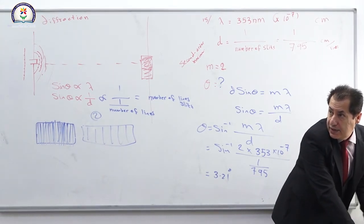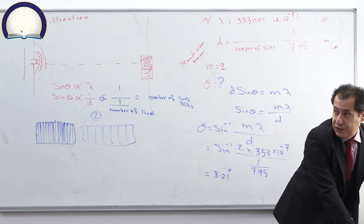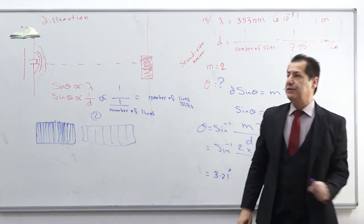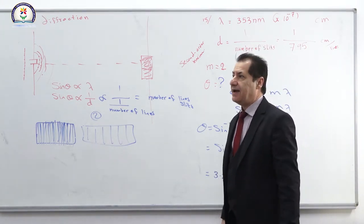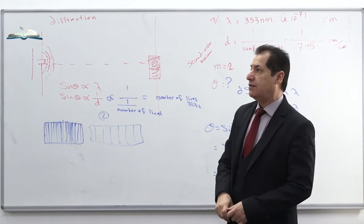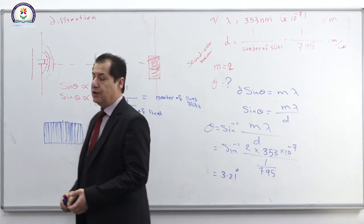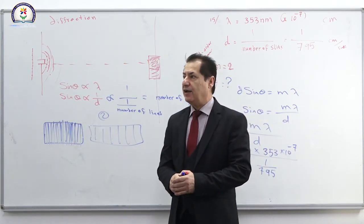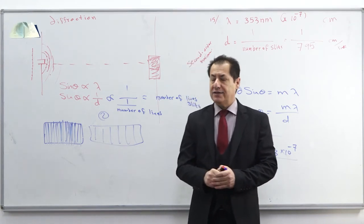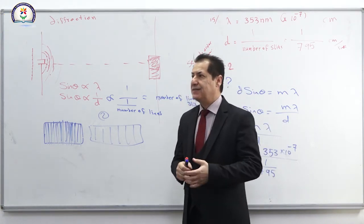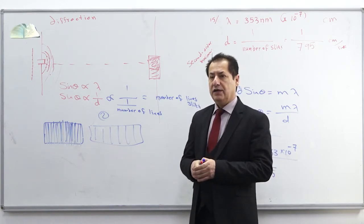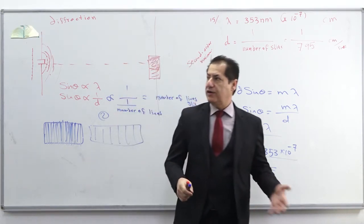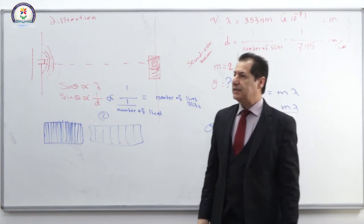Question number sixteen is similar to question fifteen, so I won't resolve it. Question number seventeen: what properties does laser light have that are not found in ordinary home lighting? Lasers are coherent and monochromatic, and also have higher intensity than ordinary light. Their direction cannot be changed easily.